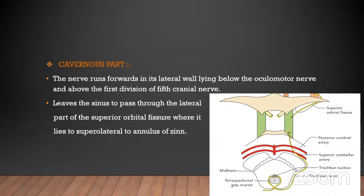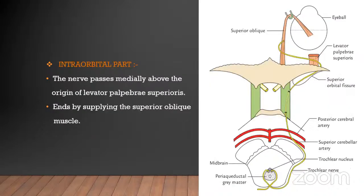The trochlear nerve runs with the oculomotor nerve, above the first division of the fifth cranial nerve, and leaves the sinus to pass through the lateral wall of the superior orbital fissure, where it lies superolateral to the annulus of Zinn. In the intraorbital part, the nerve passes immediately above the origin of the levator palpebrae superioris muscle to supply the superior oblique muscle.